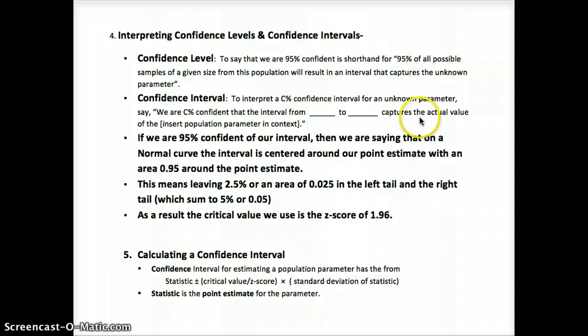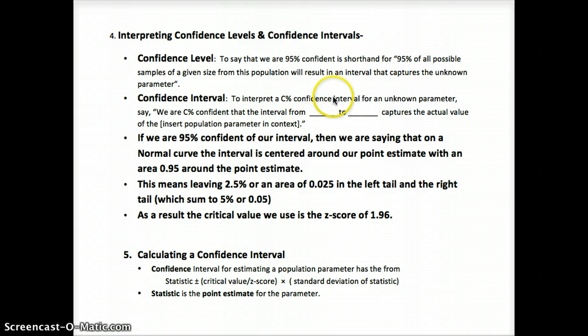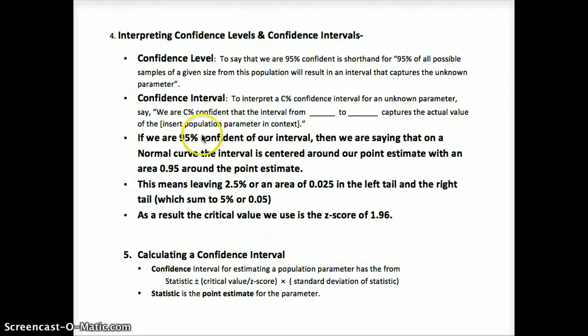Here's a sentence template to use when interpreting confidence intervals: 'We are [confidence level] percent confident that the interval from [lower bound] to [upper bound] captures the actual value of [the population parameter].' The interval is centered around our point estimate with an area of 0.95 around it. That doesn't include the top 2.5% and the bottom 2.5% of the normal curve, or 0.025 as a proportion.